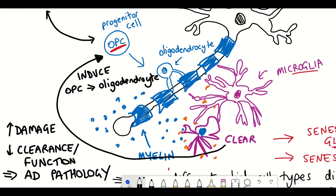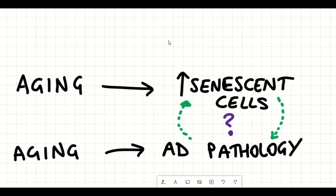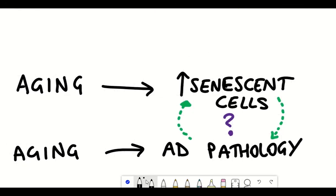Increased damage and a reduced capability of microglial cells could be the cause of senescence in both the microglial cells themselves and also the OPC cells.